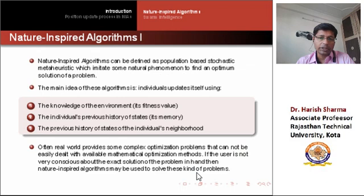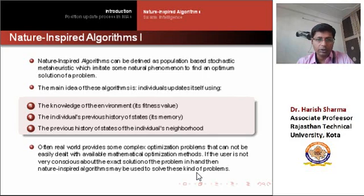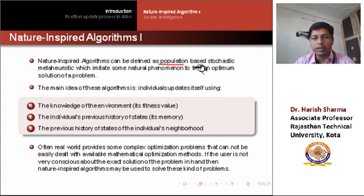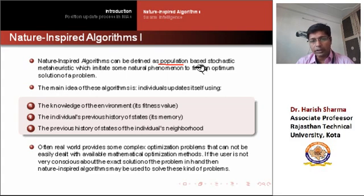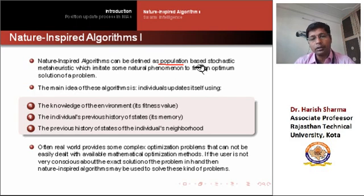A formal definition of nature-inspired algorithms is that they can be defined as population-based stochastic metaheuristics, which imitate some natural phenomena to find an optimal solution of a problem. Here, population means a group of individuals are used in the solution search process. They interact with each other and learn from each other.